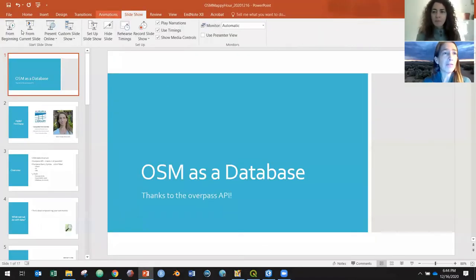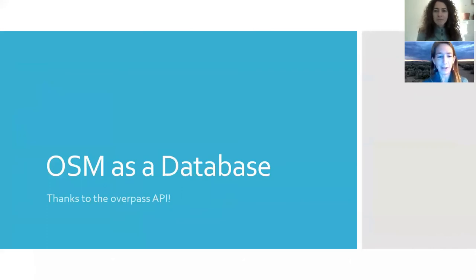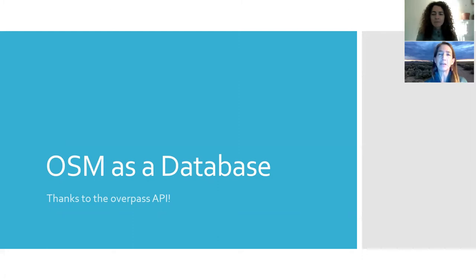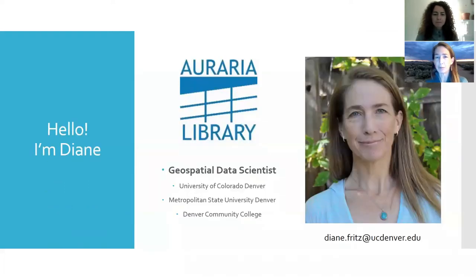I have a little slideshow to share, and mostly I want to talk about OpenStreetMap as a database. This is all thanks to the Overpass API that Roland has created. I want to emphasize that it is this one individual thing that all of our queries hit, and it works really, really hard. So we want to keep in mind when we use Overpass Turbo or some of the other tools to keep our queries to a minimum — only what we really need.